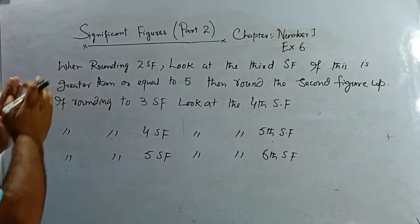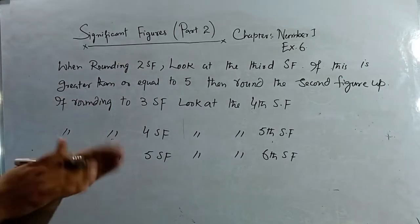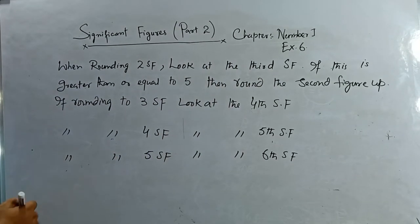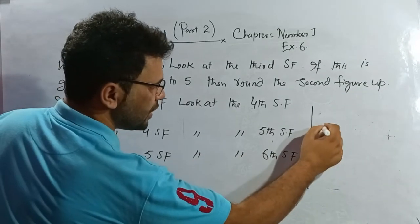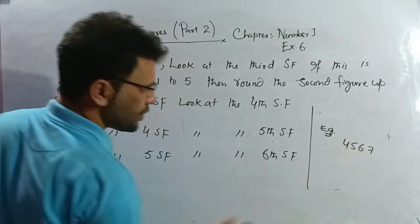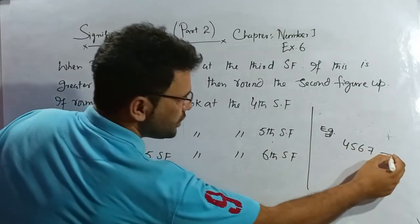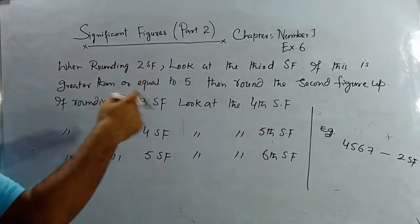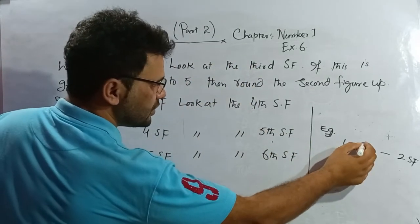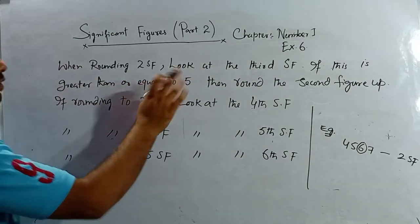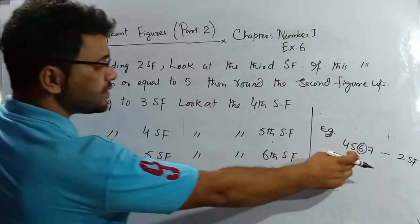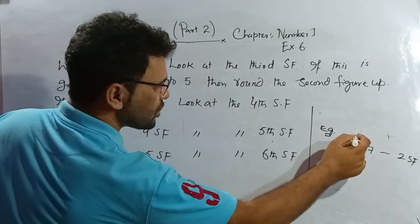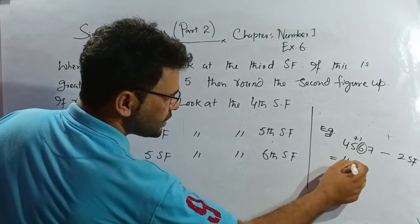You can see here on the board: when rounding to 2 SF, look at the third SF. For example, if I have the number 4567 and the question is to round it corrected to two significant figures, I should look at the third digit. This is greater than five, so I round the second figure up — plus one. The answer is 4600.